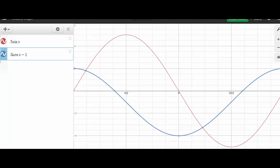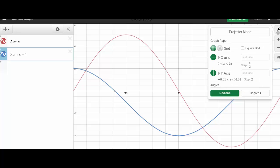All right, so you'll see that I've put in the two functions we have five sine of x and notice that that is the red function right here and we have three cosine of x minus one. I've also taken the liberty of controlling for our domain. So if you go into the graph settings right here you'll notice that I've made our domain go from zero to two pi.